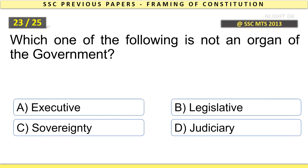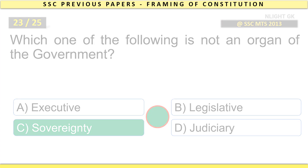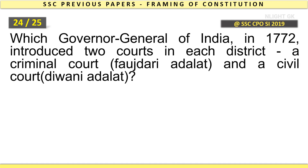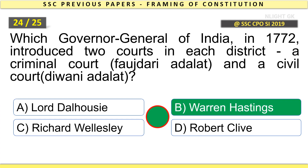Which one of the following is not an organ of the government? Which Governor General of India in 1772 introduced to courts in each district — a criminal court (Fauzdari Adalat) and a civil court (Diwani Adalat)? Warren Hastings.